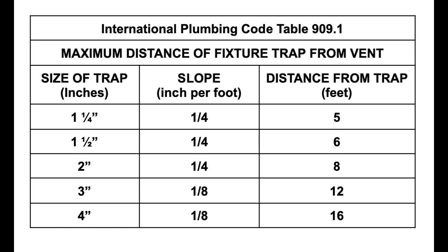Let's pause and look at the trap arm distance as defined in the International Plumbing Code — Table 909.1, Maximum Distance of Fixture Trap from Vent. The first column is the size of the trap, your pipe size, from 1¼ inch down to four inch. The second column is slope in inches per foot, and the third column is the distance from the trap arm. A 1¼-inch pipe has a maximum trap arm distance of five feet; 1½-inch pipe has a maximum of six feet; two-inch pipe has a maximum of eight feet — all at a quarter inch per foot slope.